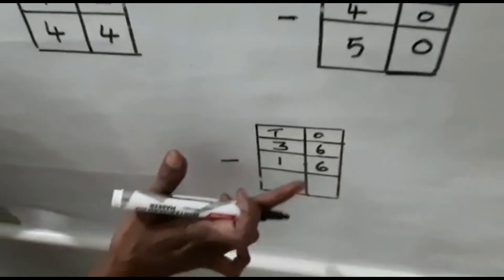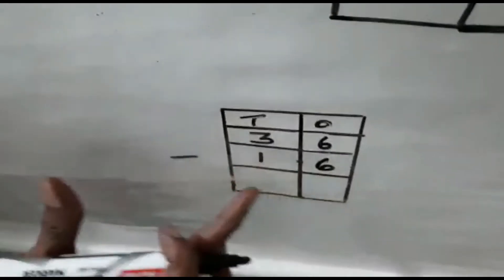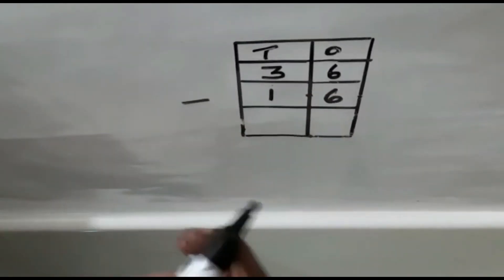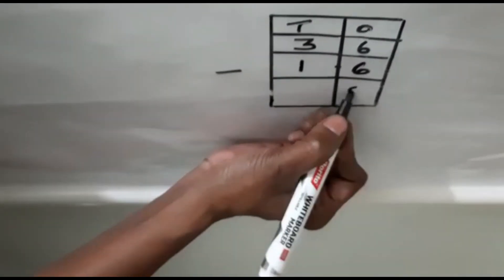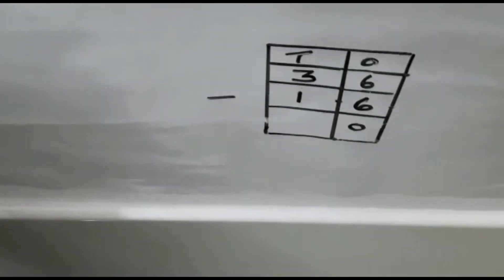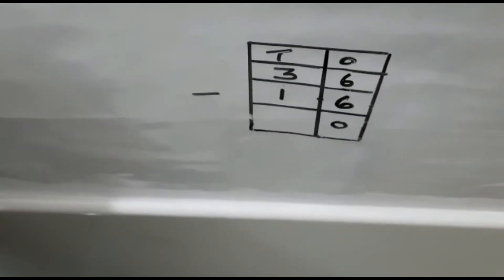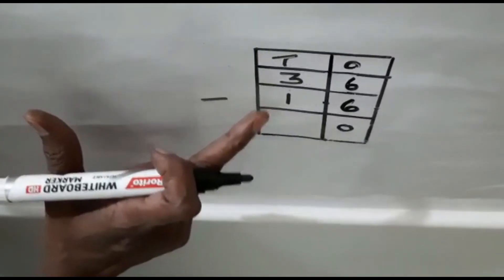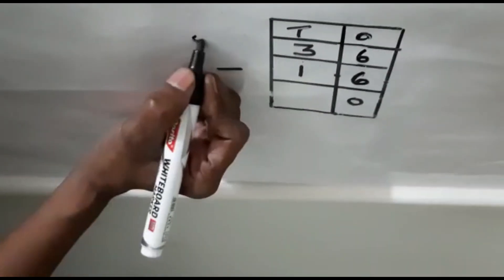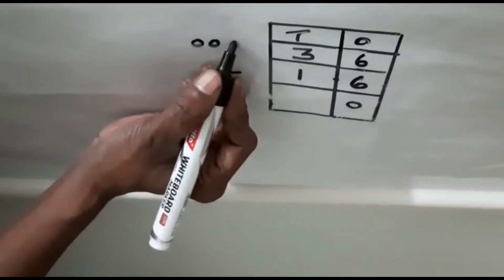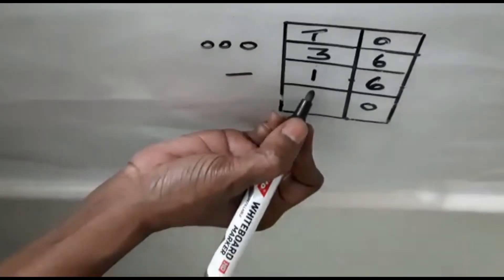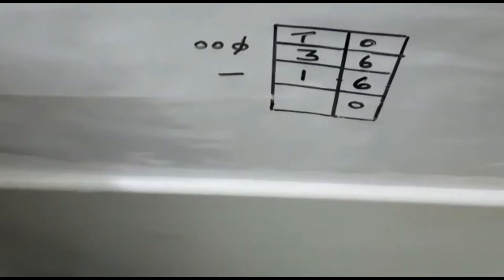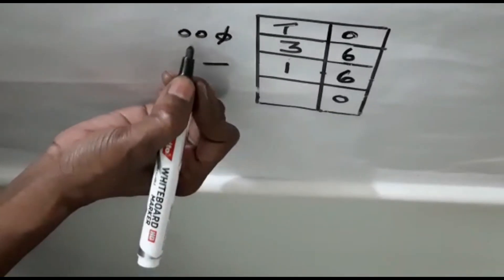Now again here, same number: 36 and 16 — 6 minus 6 means when the same number comes, the answer is 0. 5 minus 5 is 0. 9 minus 9 is 0. 4 minus 4 is 0. Now here you can see 3 minus 1: 1, 2, 3 — you must cancel 1 number. How many numbers are remaining? 1, 2.